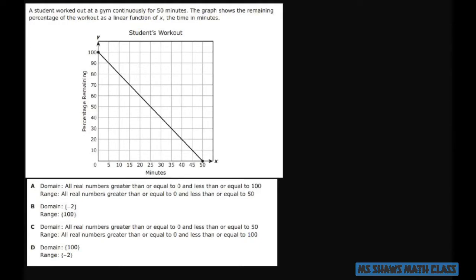So all we have to do is look at the graph. The domain is your x values. We're starting at 0 and we're going to 50, so x is between and equal to 0 and 50. That's your domain, and it can equal it because these are closed in.